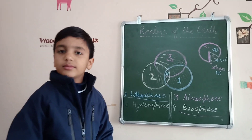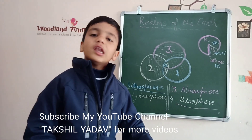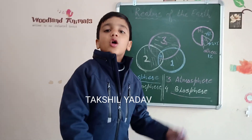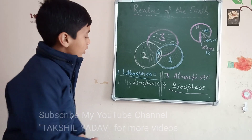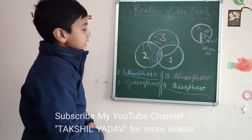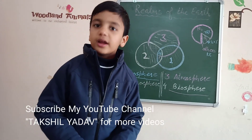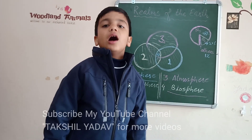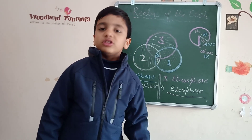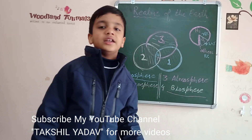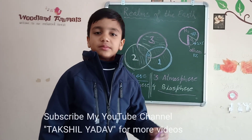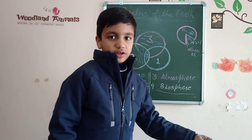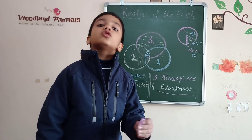Lithosphere. Lithosphere, or land, is the entire solid portion of the earth. About 71% of the earth is covered with water and forms the hydrosphere. The remaining 29% is rock and land that makes up the lithosphere. It contains continents.